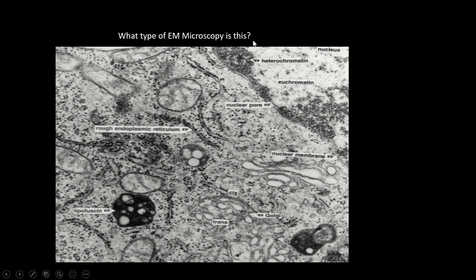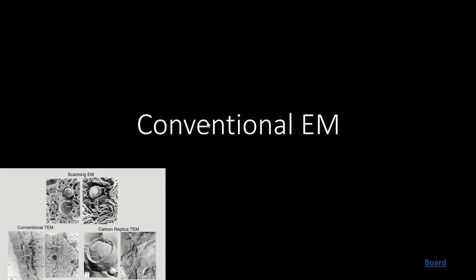What type of EM microscopy is this? The one that looks like what you're used to — flat and very 2D — is conventional electron microscopy. Then we have scanning electron microscopy, which looks like you took a photo and scanned it, giving a very three-dimensional appearance. And carbon replica transmission electron microscopy is like making a Play-Doh mold — a cast of the tissue — telling you a lot about the surface of the tissue.